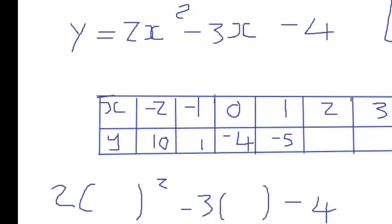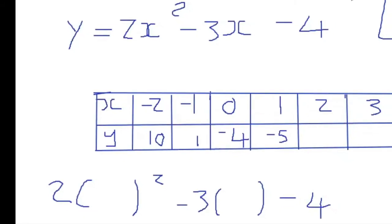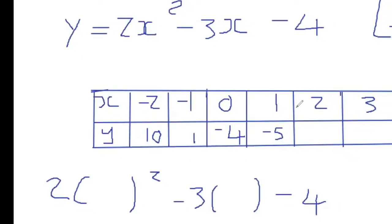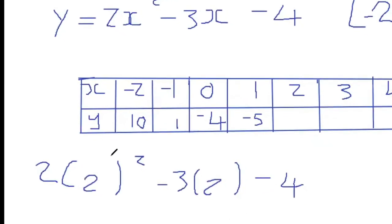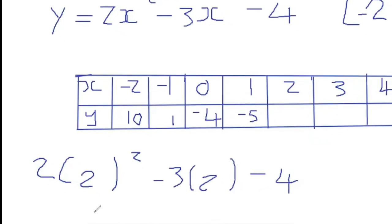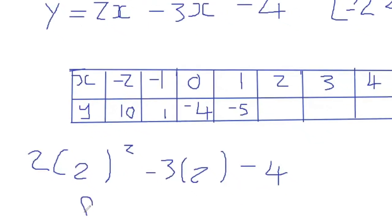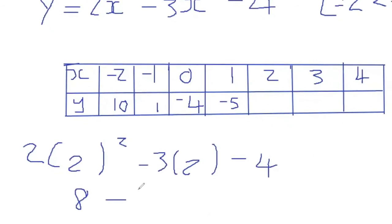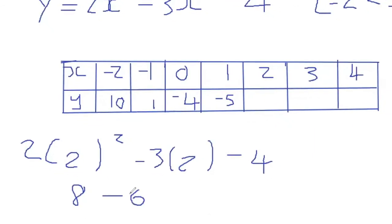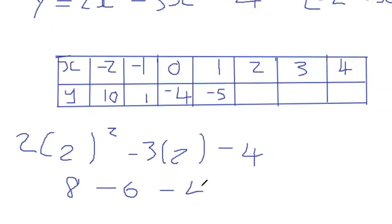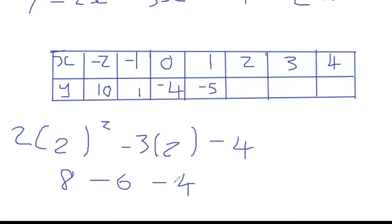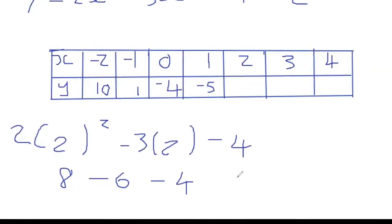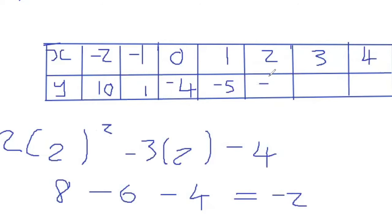Now we're going to substitute x equals 2. So calculating it: 2 squared times 2 gives you 8. Minus 3 times 2 is negative 6, take away 4. So 8 minus 6 is 4, minus 4 gives our answer as negative 2.